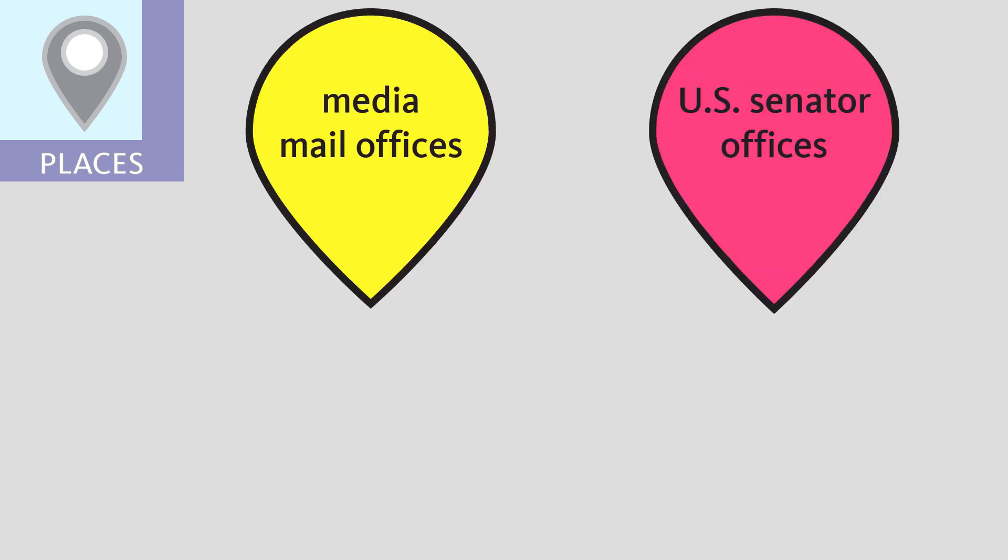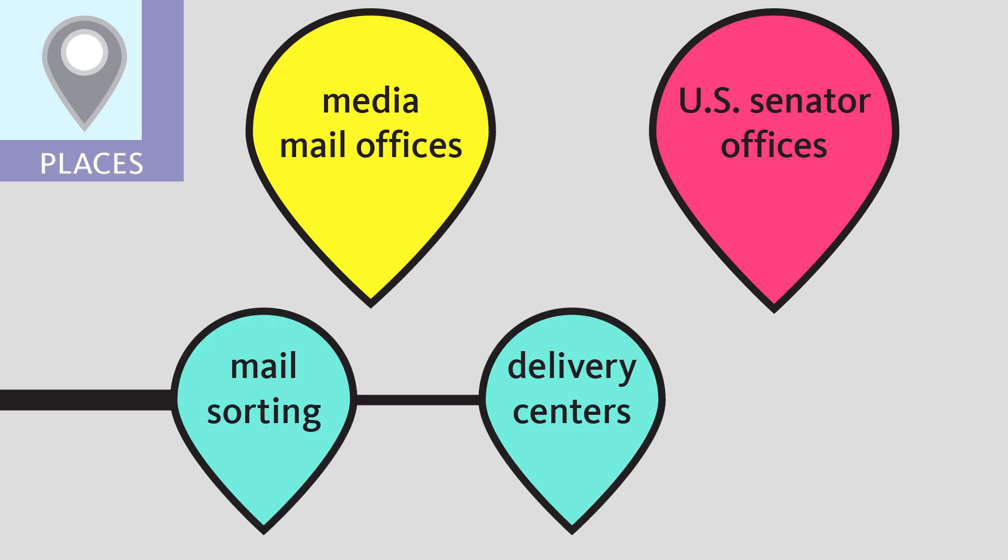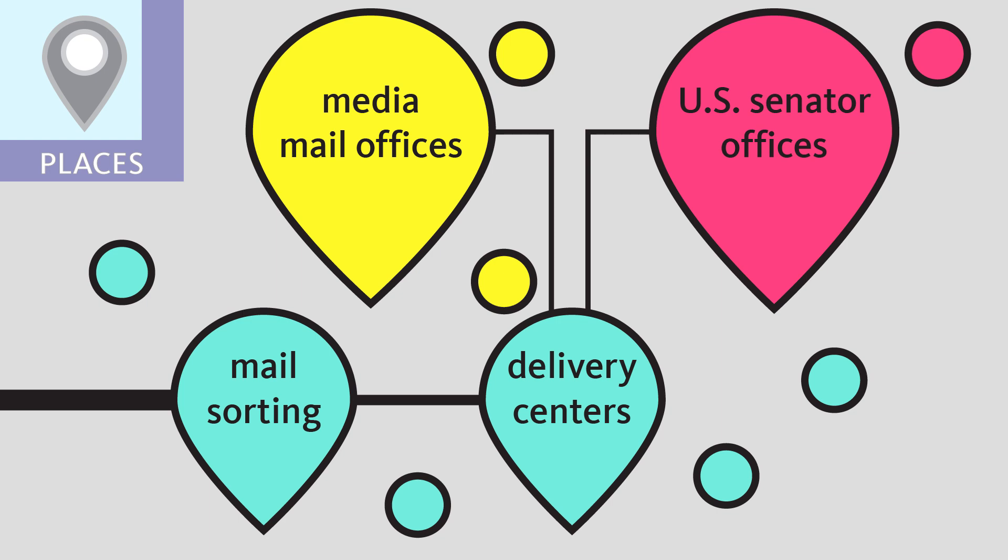Next, places. Letters containing spores were sent to media mail offices and U.S. senator offices. Letters were sent through mail sorting and delivery centers before arriving at final destinations. Cases were confirmed in seven U.S. states.